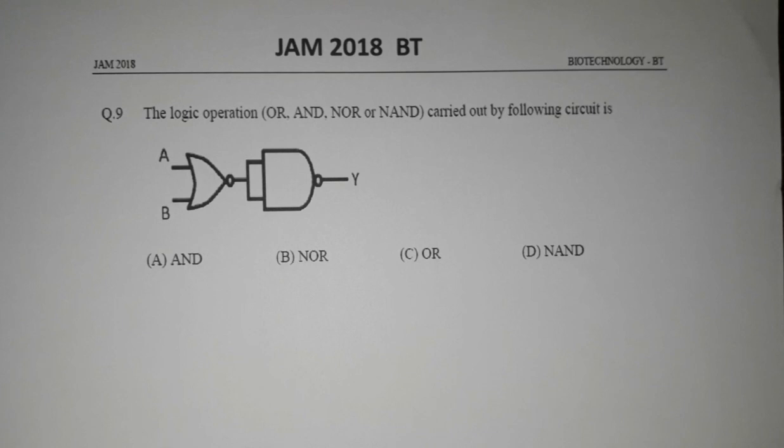OR, AND, and NOT gates are the three basic gates, and NOR and NAND gates are the two universal gates.